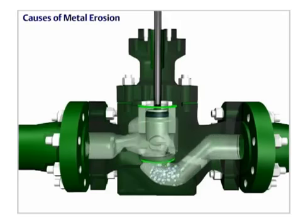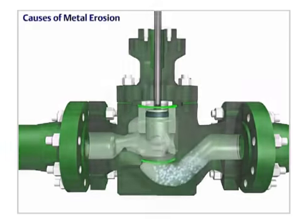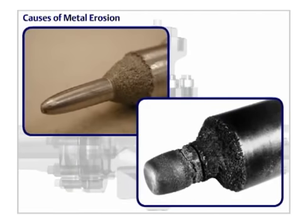Cavitation occurs when the fluid vaporizes then returns to a liquid state as the pressure increases downline. The metal damage caused by cavitation is rough and irregular due to pitting of the surface.